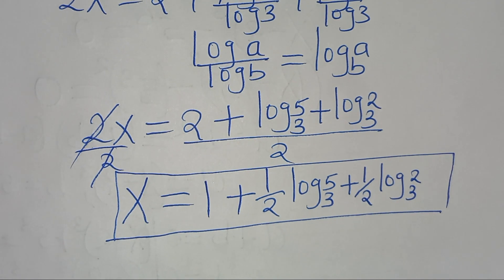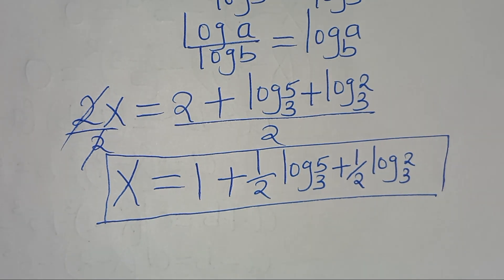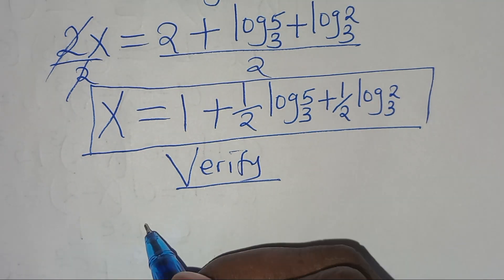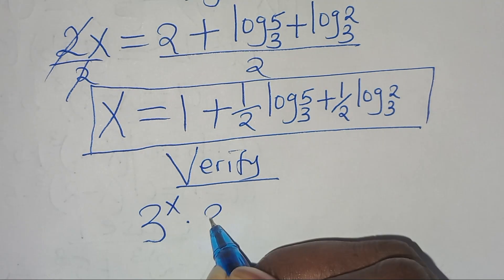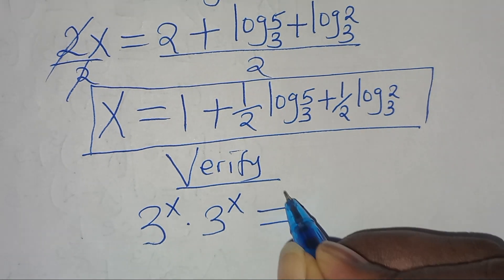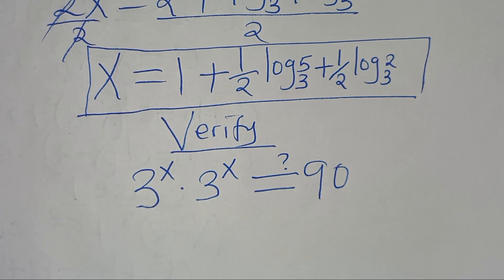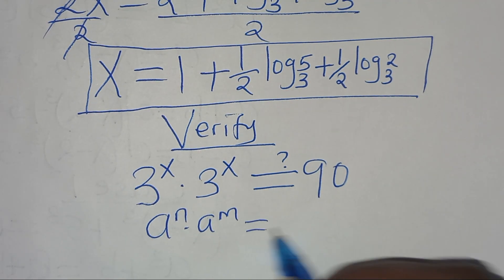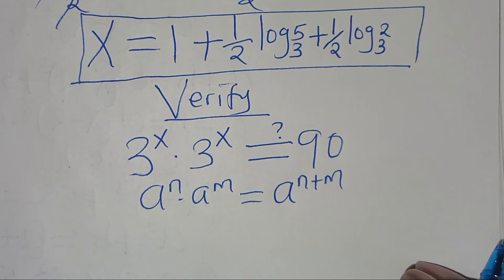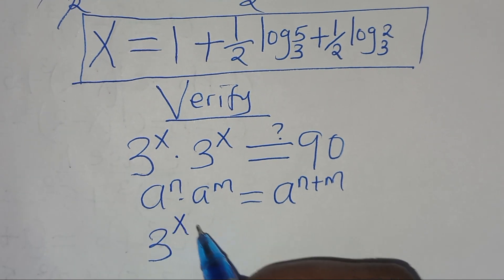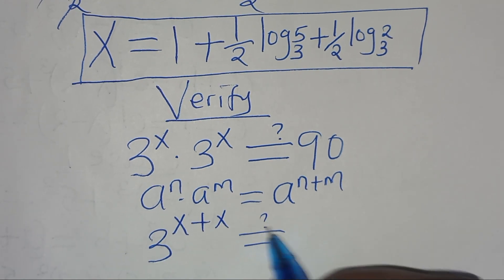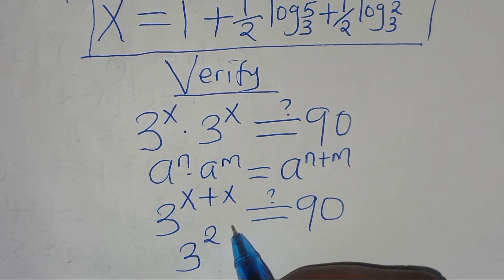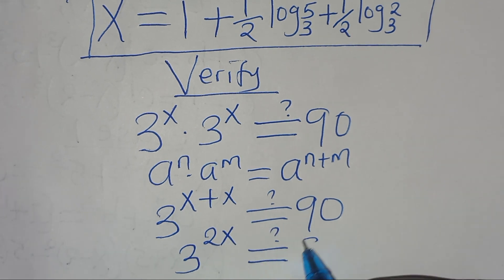The next step is to verify that this value of x satisfies the equation. Recalling that 3^x × 3^x should equal 90, and since this is in the form a^n × a^m equals a^(n+m), we have 3 to the power of x plus x, which is 3^(2x), and this should give us 90.